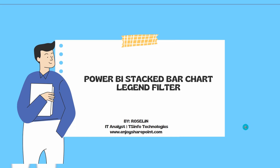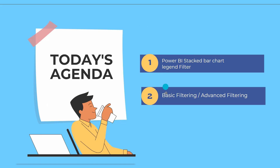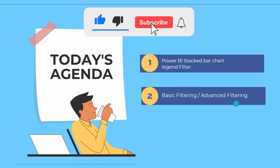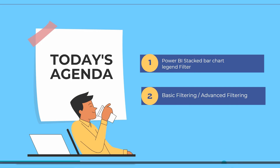In the previous video we learned what a legend is and how to add a legend into our Power BI reports. So in this video we will cover two things: how to apply the basic filtering, also called primary filtering, and how to apply the advanced filter for the stacked bar chart in the Power BI report.